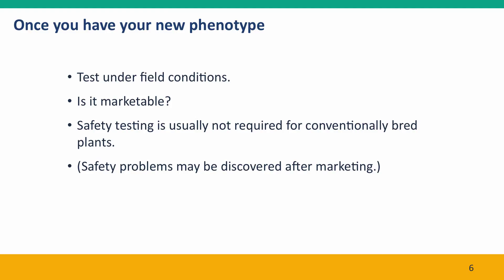Even once you have your new phenotype, you have to test it under field conditions — the conditions your growers will be using. Most importantly, you have to test whether it's really marketable: does it grow well enough, yield large enough crops, and have enough attractive properties to sell? The one thing you usually don't have to do is safety testing — it's natural, so why worry? Of course, this is not a guarantee. Lots of natural plants are quite toxic. But in the case of conventionally bred plants, any safety problems — toxicity, allergens, or anything else — are usually only discovered long after the plant has been brought to market and is being widely consumed.